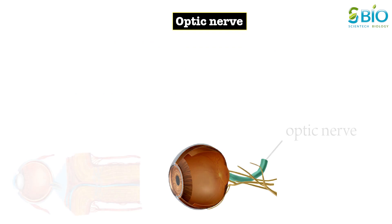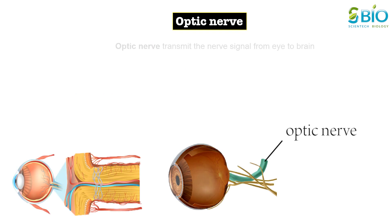The optic nerve, a bundle of over one million nerve fibers, is responsible for transmitting nerve signals from the eye to the brain. These nerve signals contain information for processing by the brain. The front surface of the optic nerve which is visible on the retina is called the optic disc or optic nerve head.